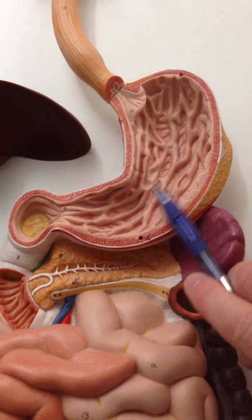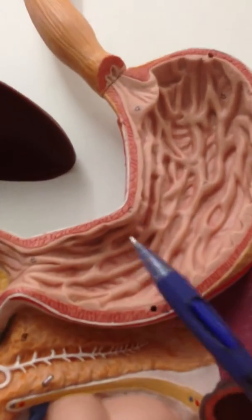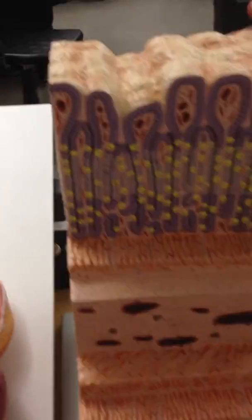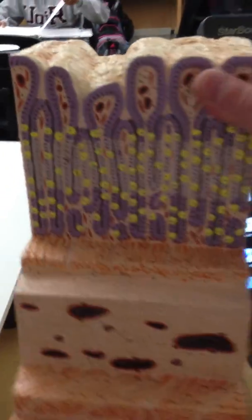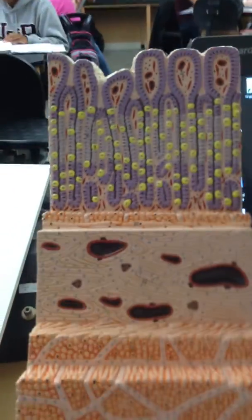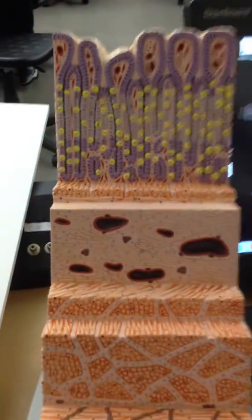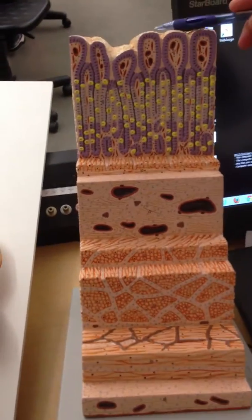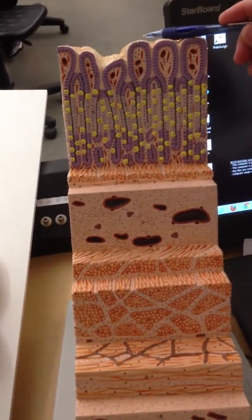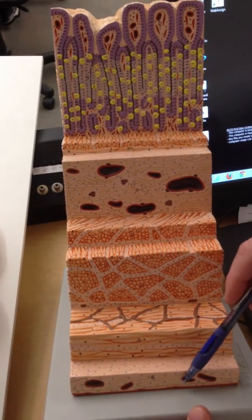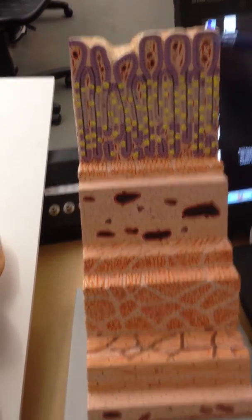So if we transition from what we're looking at here in the stomach and go to this model, this model represents all layers, each of the layers or tunics, from the inner lining up here to the outer portion on its surface in the body cavity.